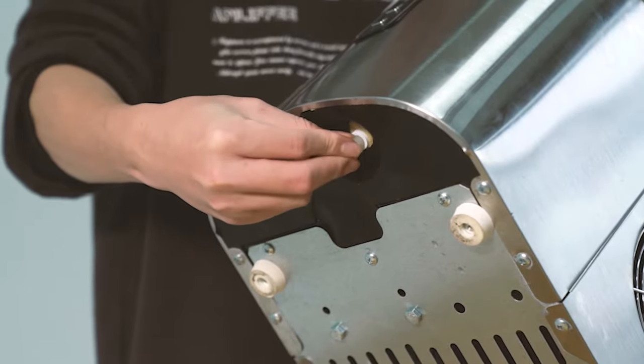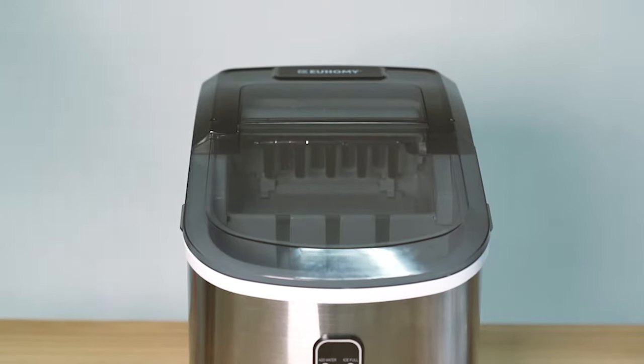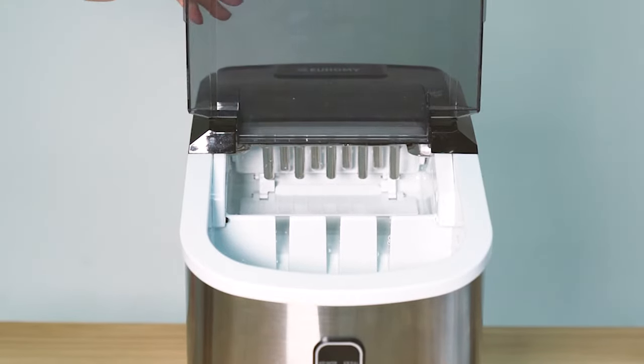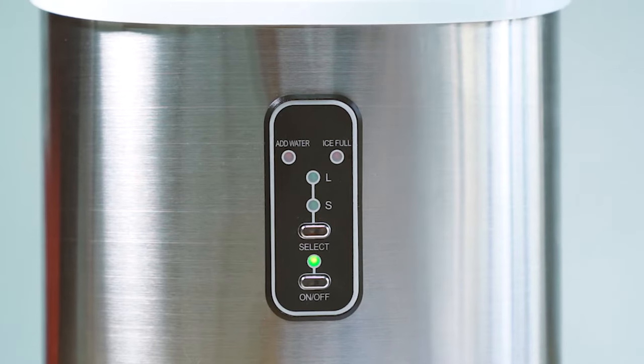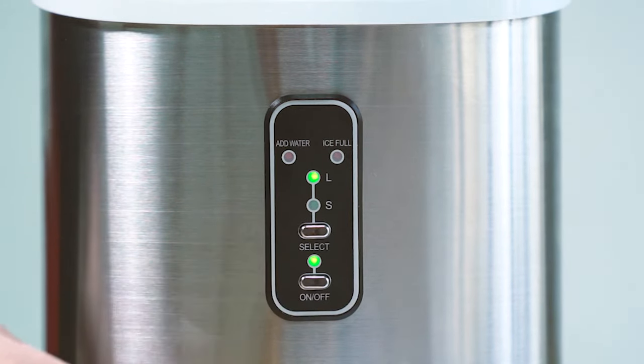Now, after cleaning, you understand that the ice maker still has residue of vinegar and cleaning solution. So to cleanse, we are going to put water, close the cover, plug the machine and make ice at least once to ensure the cleanness of the future ice production.